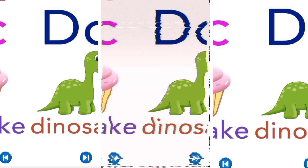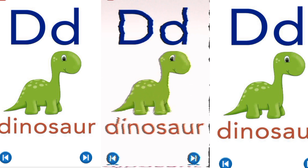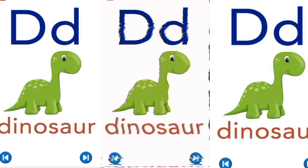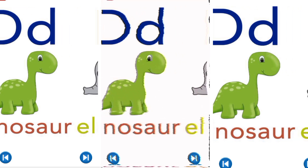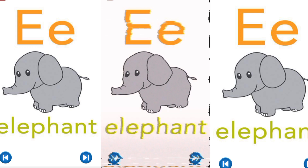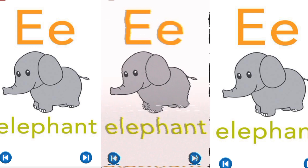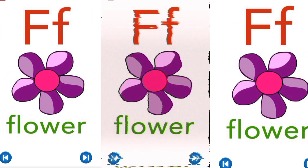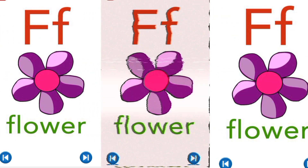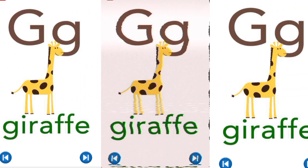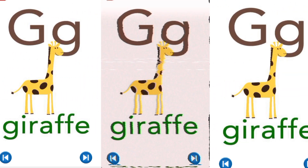D, D for dinosaurus. E, E for elephant. F, F for flower.